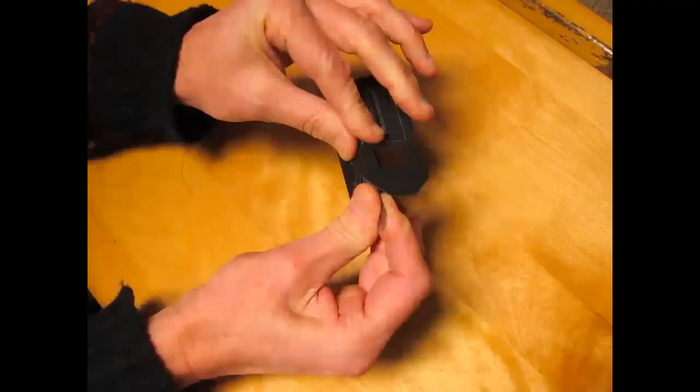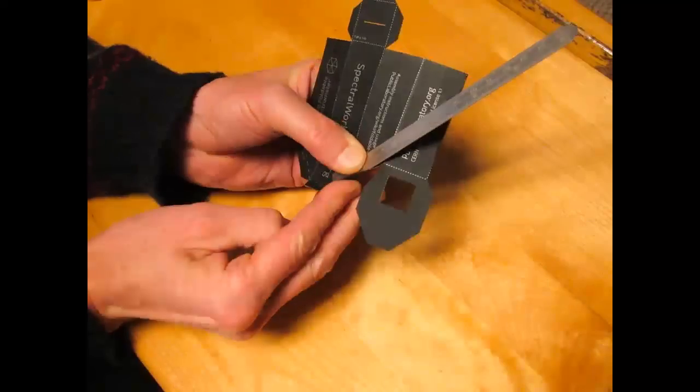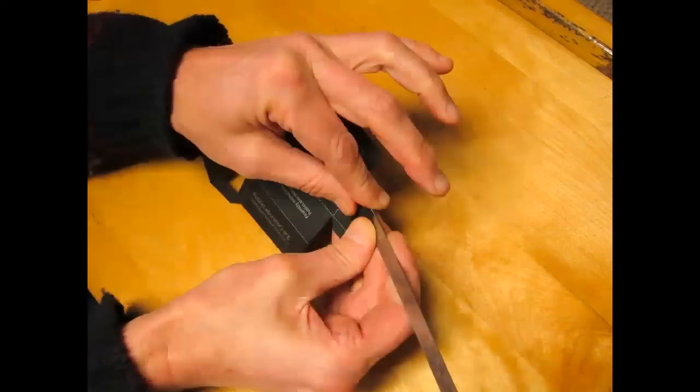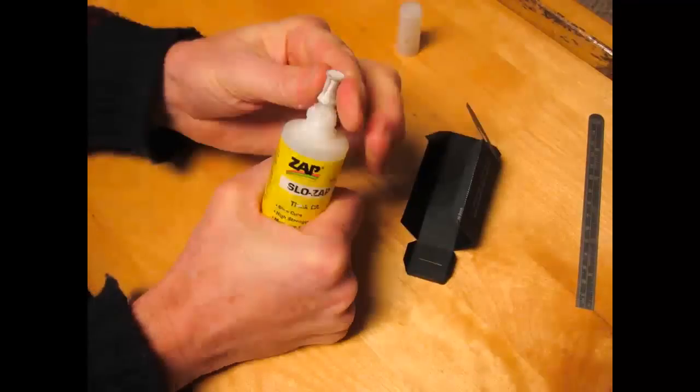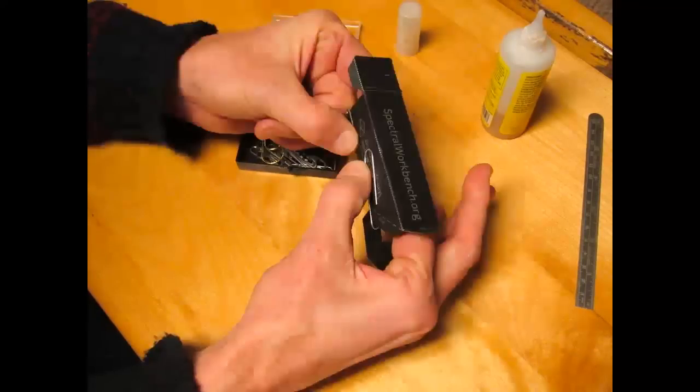First we have to fold up the spectrometer. I used a straight edge to make tidy folds and used super glue because I had lots of it and it dries really fast.